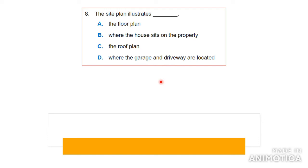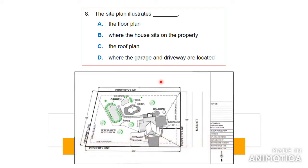Number eight: the site plan illustrates — the floor plan, where the house sits on the property, the roof plan, or where the garage and driveway are located? The purpose of the site plan is to show where the house sits on the property. It shows the corners of your property all measured out, and shows exactly where the house sits, at what angle, and how far from the edges of the land. The answer is where the house sits on the property.